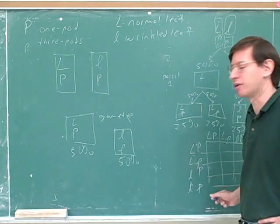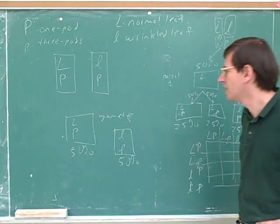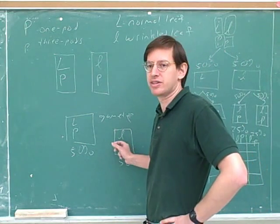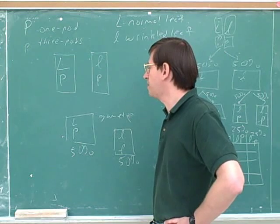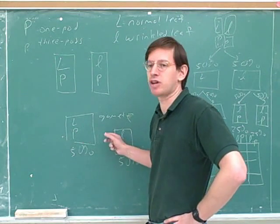You'd have a 50% chance of getting this, and a 50% chance of getting this. And the Punnett square would be much simpler now. Now there would only be two rows and two columns if these were both on the same chromosome.